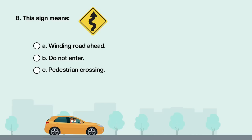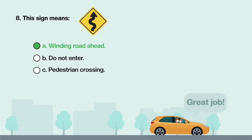This sign means: A. Winding road ahead. B. Do not enter. C. Pedestrian crossing. Answer is A: Winding road ahead.